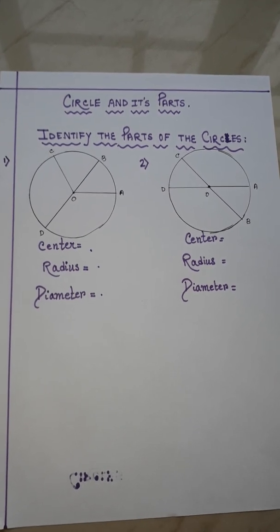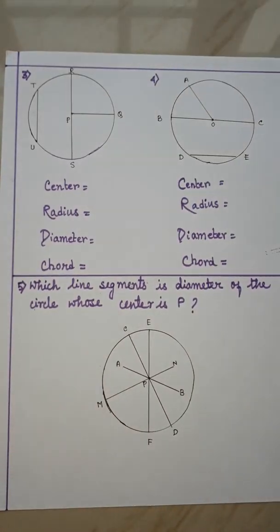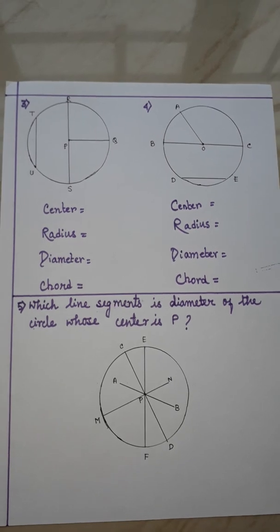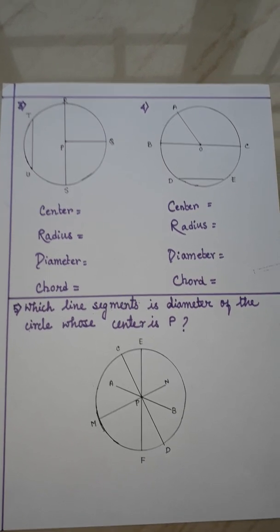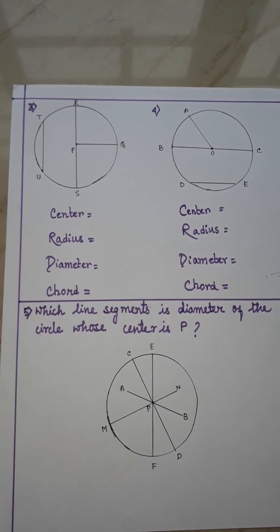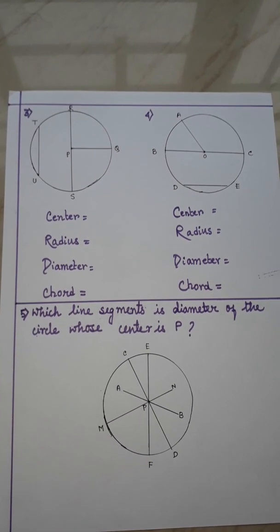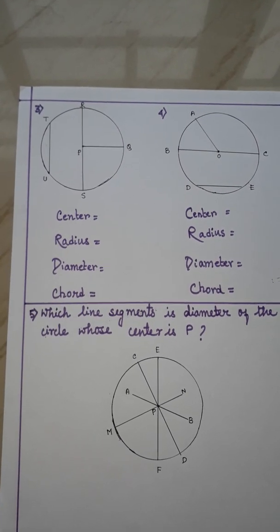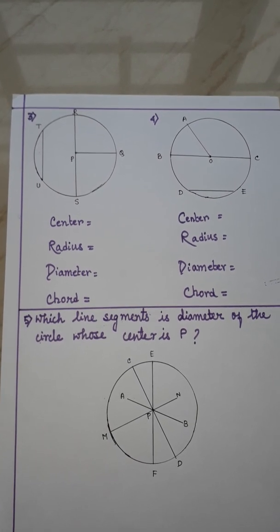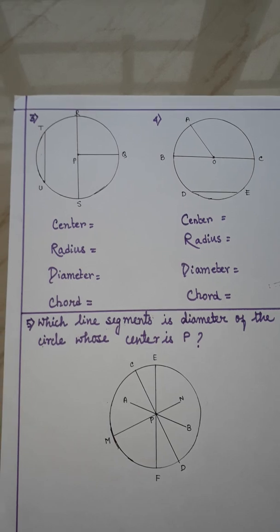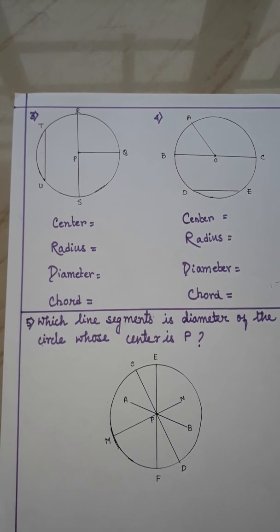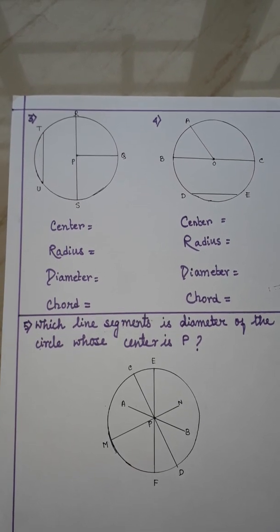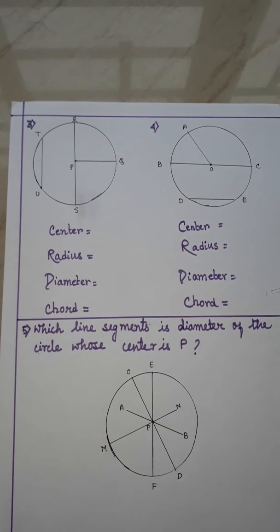Now I will go to the next page. In question number 3 and 4, similarly like question number 1 and 2, you have to find out center, radius, and diameter. Along with that, in question number 3 and 4, you also have to find out the chord of the circle. In the previous video, I have told you what chords of a circle are, so you should remember that and find out the chord of the circle in sum number 3 as well as sum number 4.